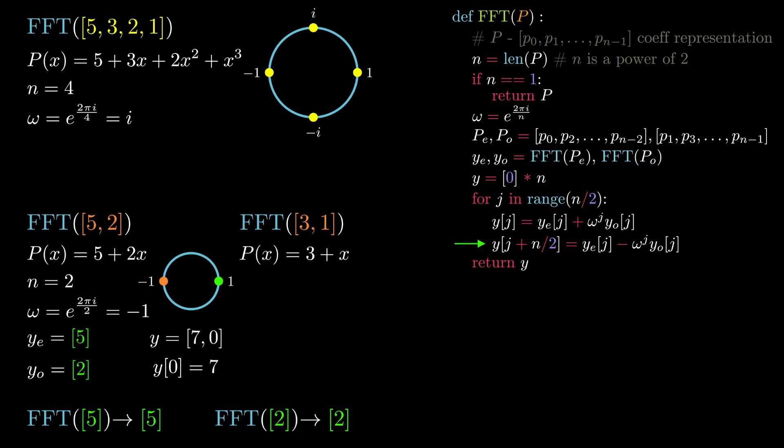Proceeding to the second line of the for loop, we assign the first index of the y list to be the zeroth index of ye minus omega to the power of zero multiplied by the zeroth index of yo. This corresponds to the evaluation step for root of unity number two, which is omega to the power of one, and the negative pair of our first root of unity. The value of this expression is three, which is then updated in the list.